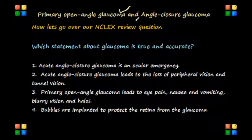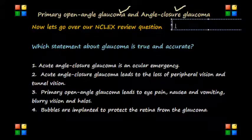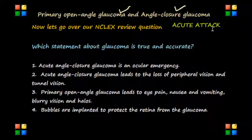On the other hand, angle closure glaucoma — or closed angle glaucoma — happens when someone's iris is very close to the drainage angle in the eye, and the iris can almost end up blocking the drainage angle. You can think of it like a piece of paper over a sink drain. When the drainage angle gets completely blocked, eye pressure rises very quickly, and this is called an acute attack. This information is very important because it is a true emergency and you should call the ophthalmologist right away, or the person can go blind.